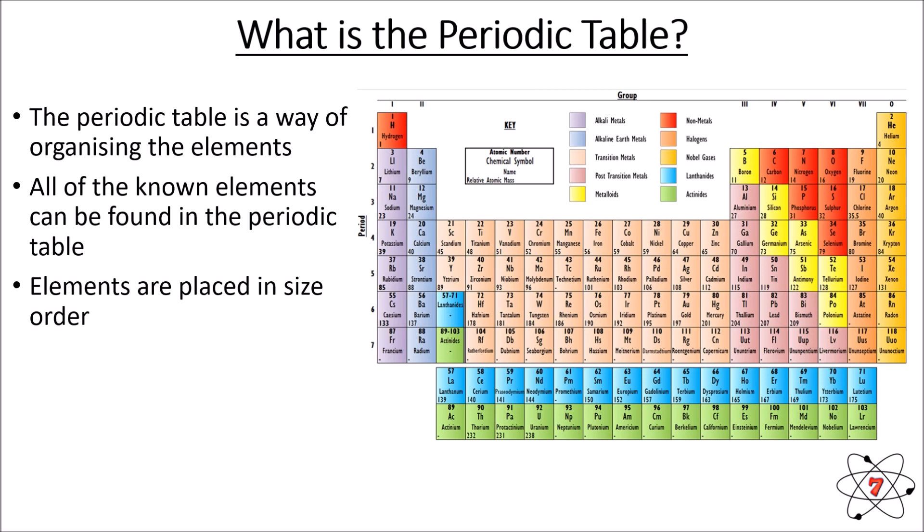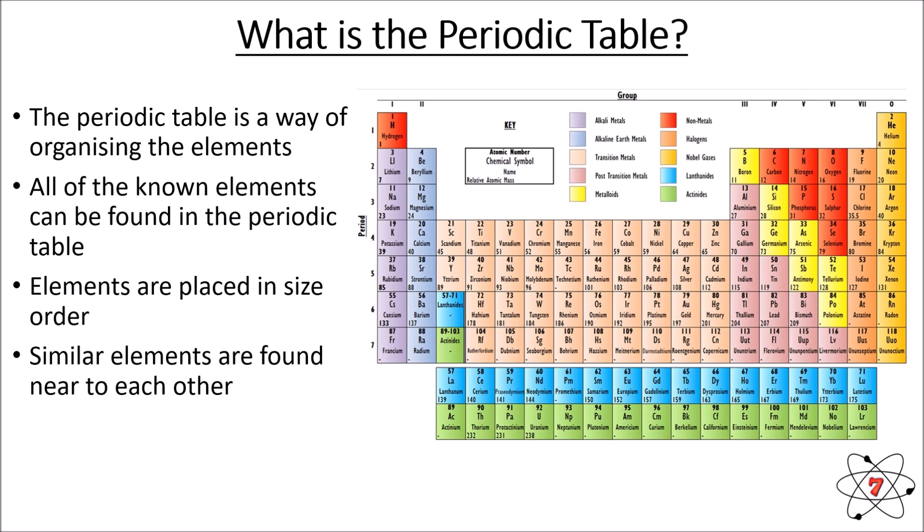The elements are placed in size order, and this is really important. Hydrogen is our first and smallest element, then helium, lithium, beryllium — they go in order from left to right and then going down, essentially how you would read a book. Similar elements are found near to each other, meaning elements close together in the periodic table will have similar properties, though there are rules to these patterns we'll look at later.